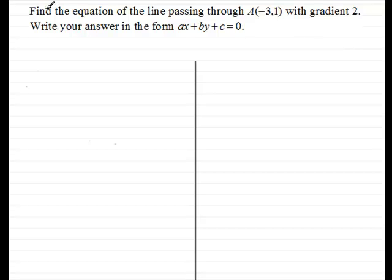Now to do this we've got an example here to find the equation of a line passing through a point A with coordinates minus 3, 1. It has a gradient of 2 and what we've got to do is write the answer in the form AX plus BY plus C equals 0 where A, B and C are constants.